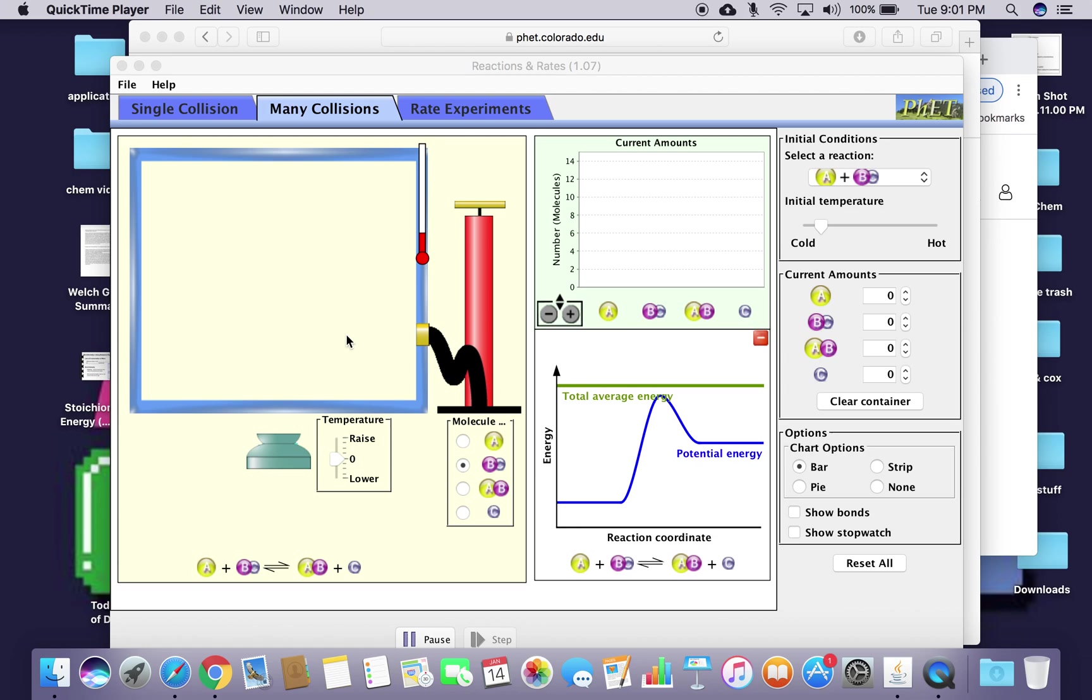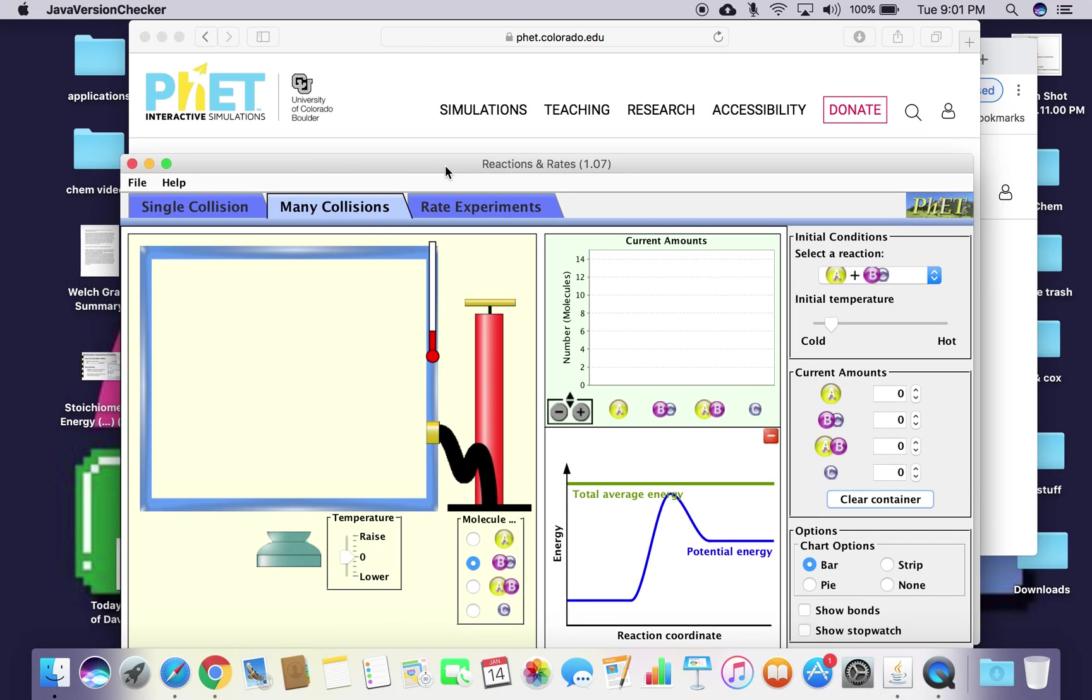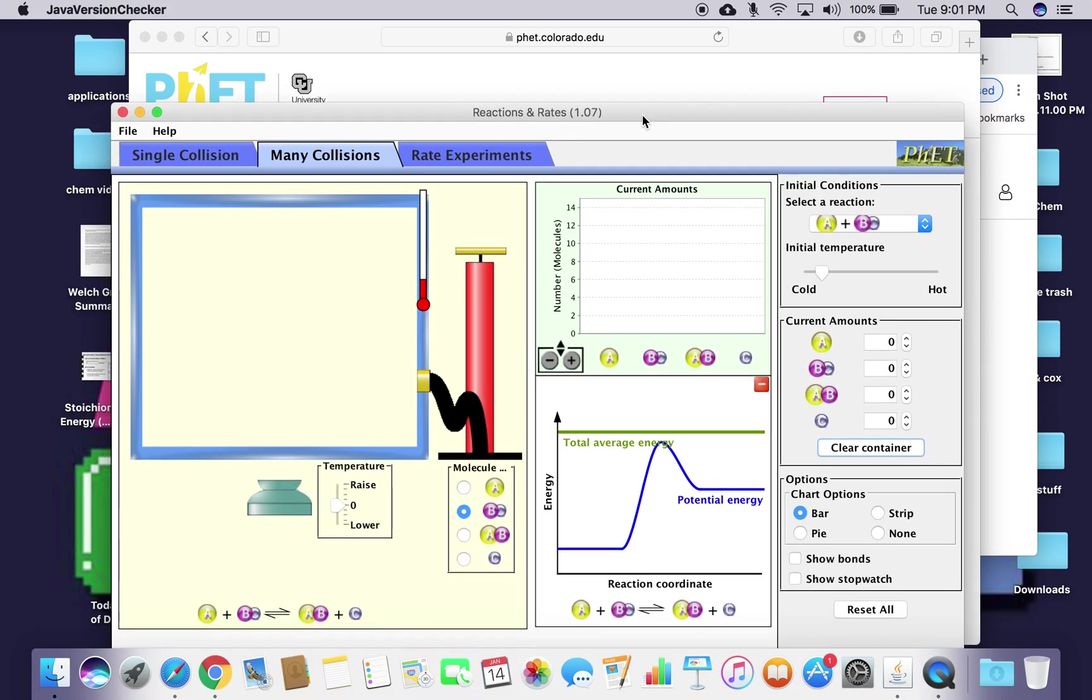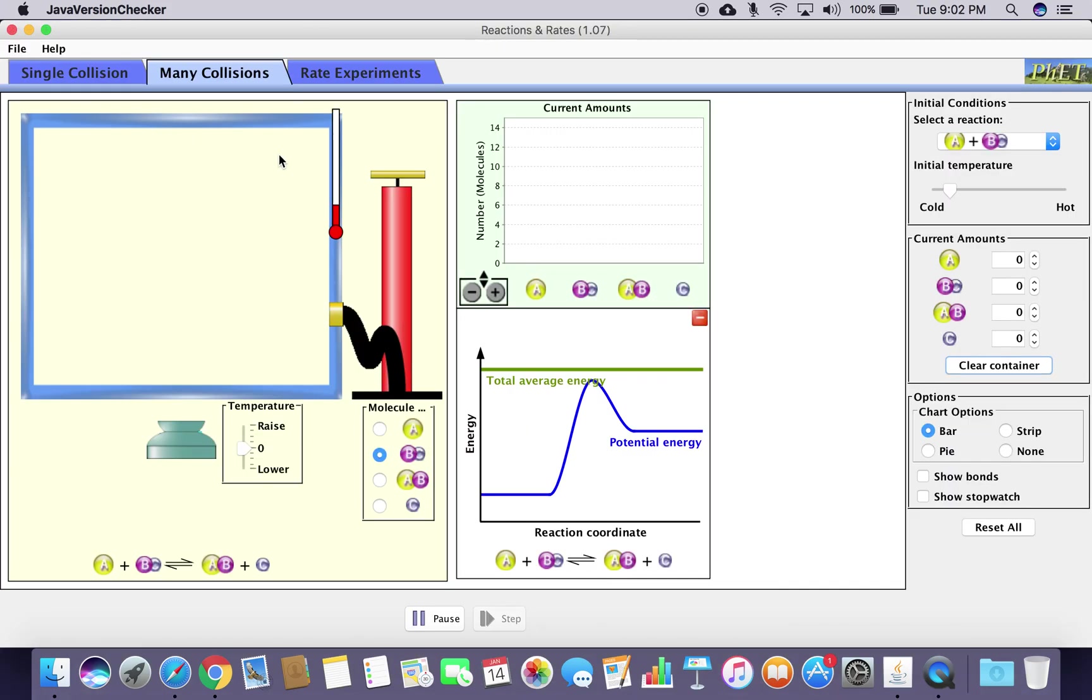The University of Colorado at Boulder has a simulation website with a lot of different things that you can look at. I've chosen reactions and rates, and you can find a lot of other simulations under that section. I'm going to blow this window up and we're going to do three scenarios.